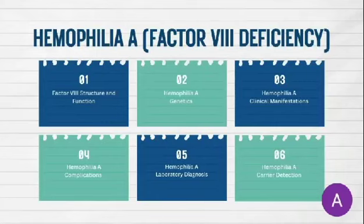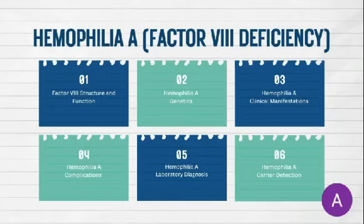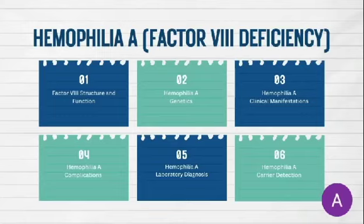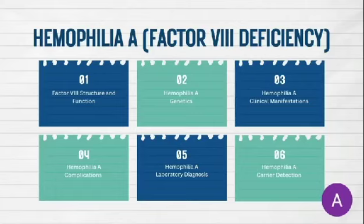Hemophilia A is a factor 8 deficiency. The hemophilias are congenital single-factor deficiencies marked by anatomic soft tissue bleeding. Second to von Willebrand disease, hemophilia is the most prevalent congenital bleeding disorder, occurring in 1 in 18,000 individuals, mostly males. Factor 8 is a two-chain protein of 2,885 daltons. When the coagulation cascade is activated, thrombin cleaves factor 8 and releases the large polypeptide called the B domain, which then dissociates from the molecule.